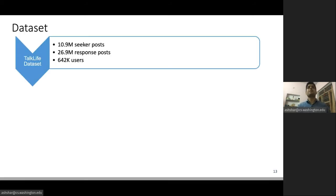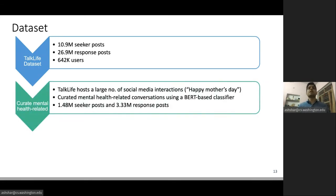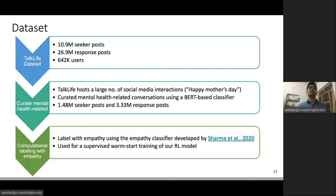Our main dataset comes from TalkLife. Overall, it has over 11 million seeker posts, 27 million response posts from 65K users. We find that TalkLife hosts a large number of social media interactions, like posts saying 'Happy Mother's Day,' and these may not be relevant for our context. So we curate only mental health-related conversations using a BART-based classifier. Next, we computationally label this curated dataset with empathy measurements using a classifier developed in prior work. We'll use this dataset for a supervised warm start of our RL model later.